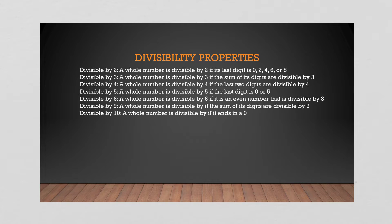The divisibility properties come in handy when we're doing our factor trees, because we want to know what we can divide our products by. So if you have, say, 124 — well, this number is even, so I can divide it by two. Also, the last two digits are divisible by four, so I could divide it by four. And four plus two is six plus one is seven, so it's not divisible by three.